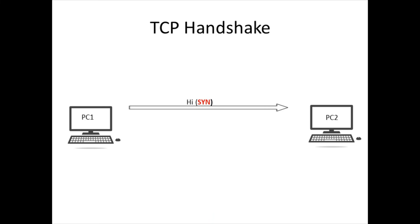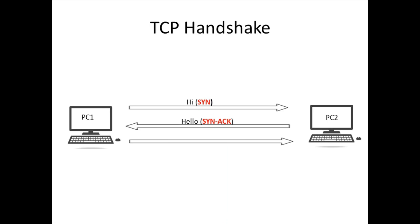On receiving the SYN packet, PC2 will reply back to PC1 with a SYN-ACK packet — essentially saying hello back. Then PC1 will reply back to PC2 saying it received the reply, and that packet is called the Acknowledgement (ACK) packet. This is how the TCP three-way handshake happens.